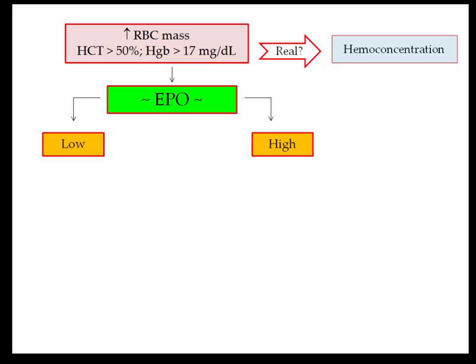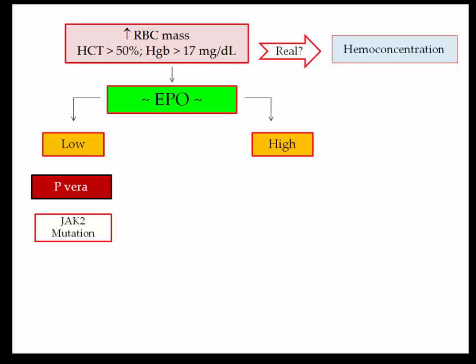When interpreting these vignettes, just pretend to be the EPO. You will either be suppressed or elevated. If elevated, is it appropriate to the clinical circumstance? If the EPO is suppressed, bingo, you're done. Obtain a blood test for the JAK2 mutation, and you've just confirmed the diagnosis of polycythemia vera.